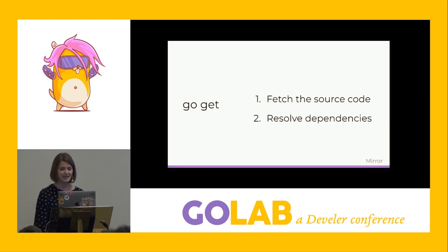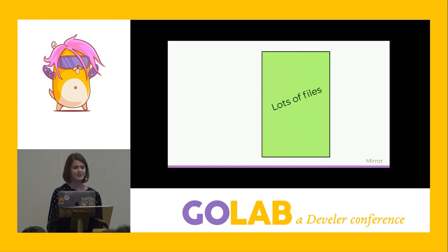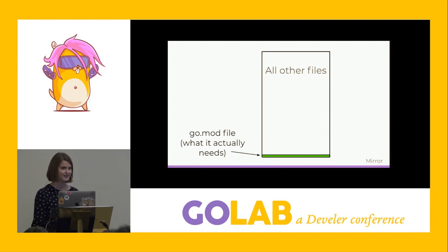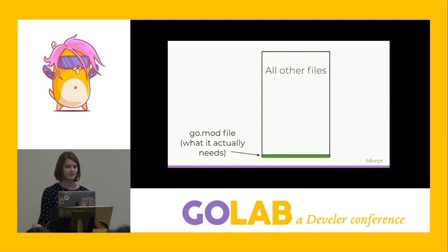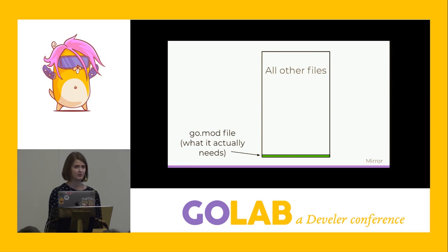For dependency resolution, the go command fetches all that source, but actually only needs a few kilobytes — the go.mod file — to do the resolution. So for a 20-megabyte module, it only needs that go.mod file. That's a lot of wasted storage and time connecting to an origin server to pull down a large file when it doesn't need it right now. For those who have been using modules without a proxy, this is the reason behind some of that latency you may have experienced, and this is where a module proxy can be really helpful.